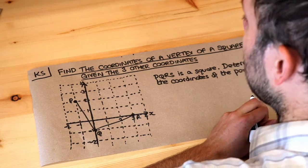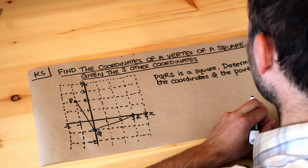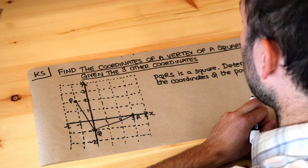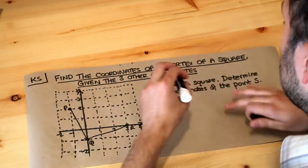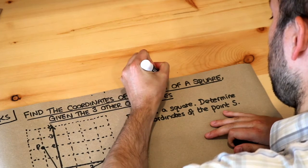Hello and welcome to this Dr. Ross Mass key skill video on finding the coordinates of the vertex of a square given the three other coordinates. Now, vertex is just a posh word for corner.